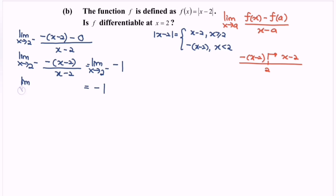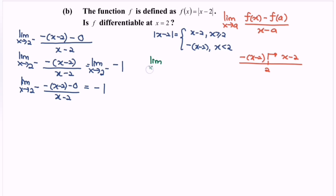So the left-hand limit: lim(x→2⁻) [-(x - 2) - 0] / (x - 2) approaches negative 1. Next, we refer to the second part: the limit as x approaches 2 from the right.